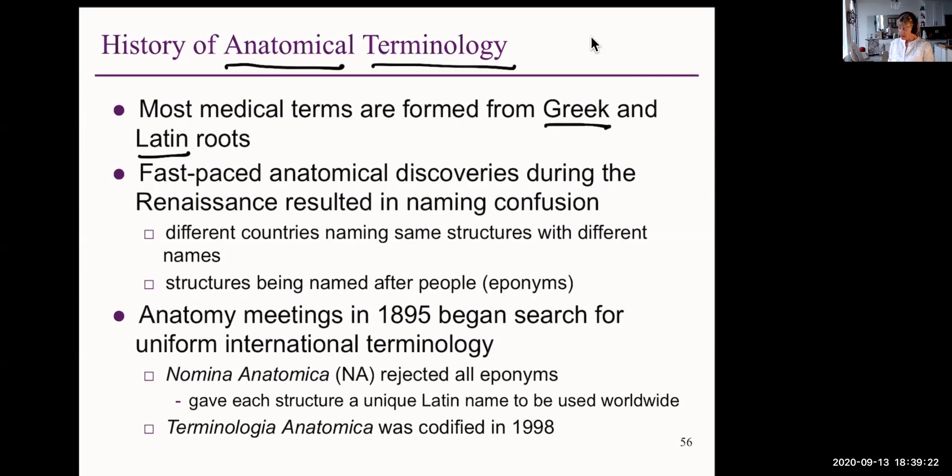Because during the Renaissance, there was so much confusion. People were discovering things at the same time and then naming them after themselves. So that caused a lot of confusion. That's known as eponyms. Eponyms are largely being dropped, like the Cowper's gland in the male reproductive system is now known as the bulbo-urethral gland, and that is a universal name.